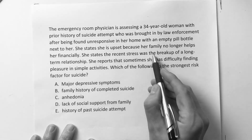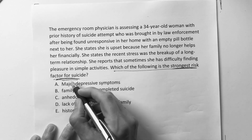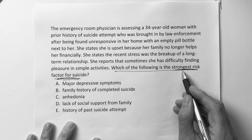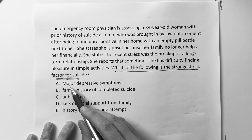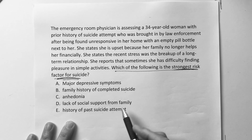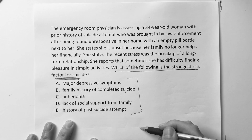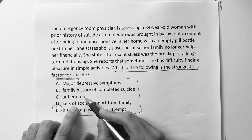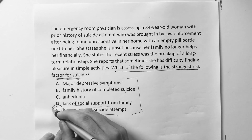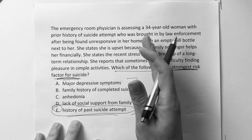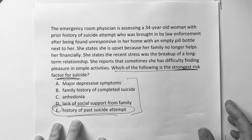Which of the following is the strongest risk factor for suicide? You just have to know this for every exam. The answer choices are: major depression symptoms, family history of completed suicide, anhedonia, lack of social support, or history of past suicide attempt. The strongest risk factor is someone who has tried it before. All the others are important and can contribute, but the one where you really have to pay attention is whether it has happened before — just like with seizures, the best predictor of a future seizure is a prior one.